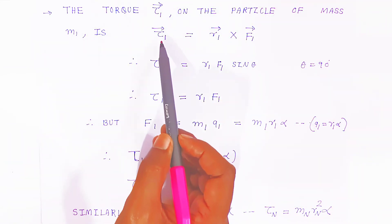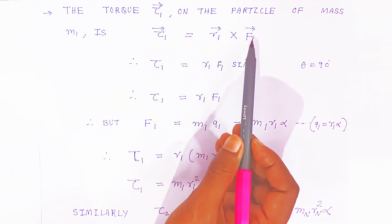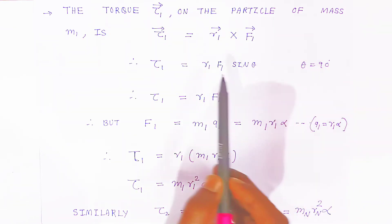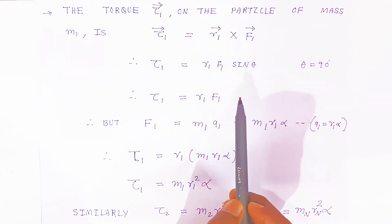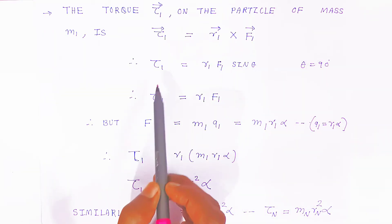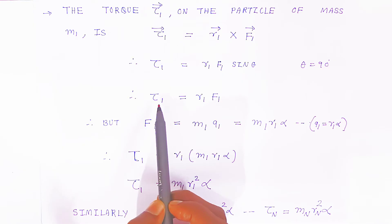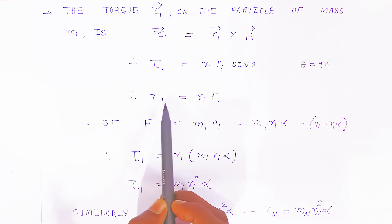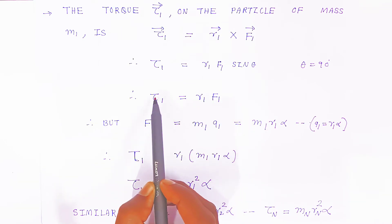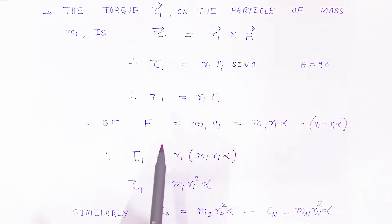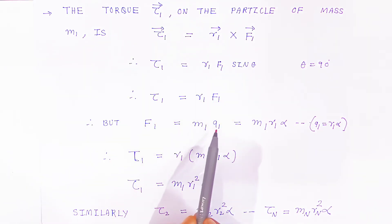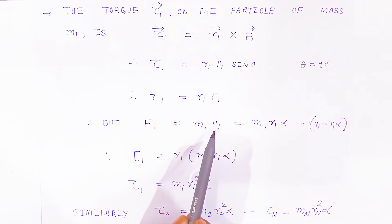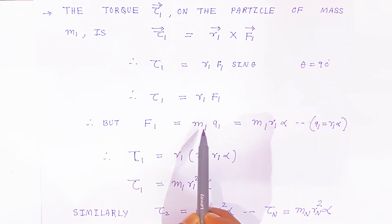The torque tau1 on the particle of mass m1 is given by: tau1 equals r1 cross f1. Since theta is 90 degrees, sin theta equals 1, so tau1 equals r1 into f1. The torque acting on the first particle is tau1 equals r1 into f1.